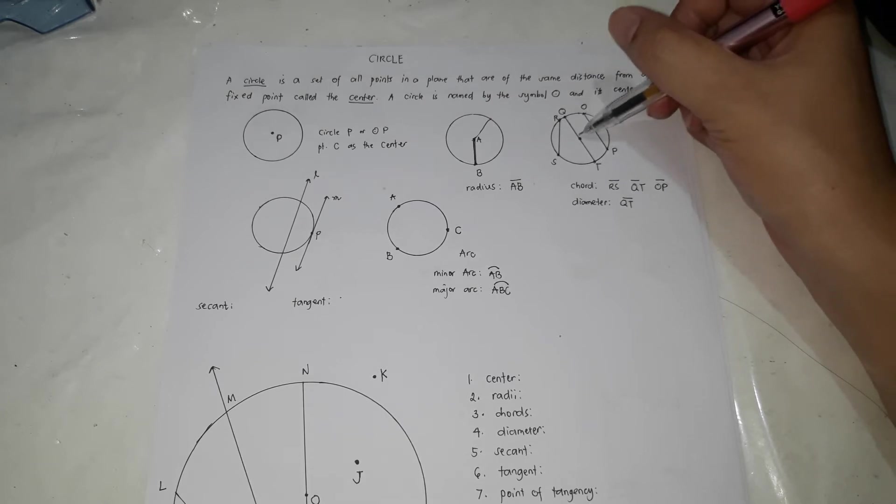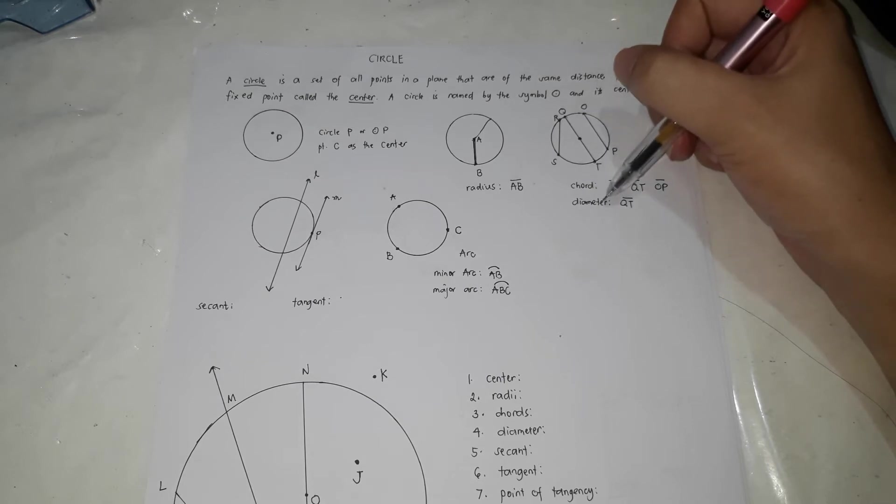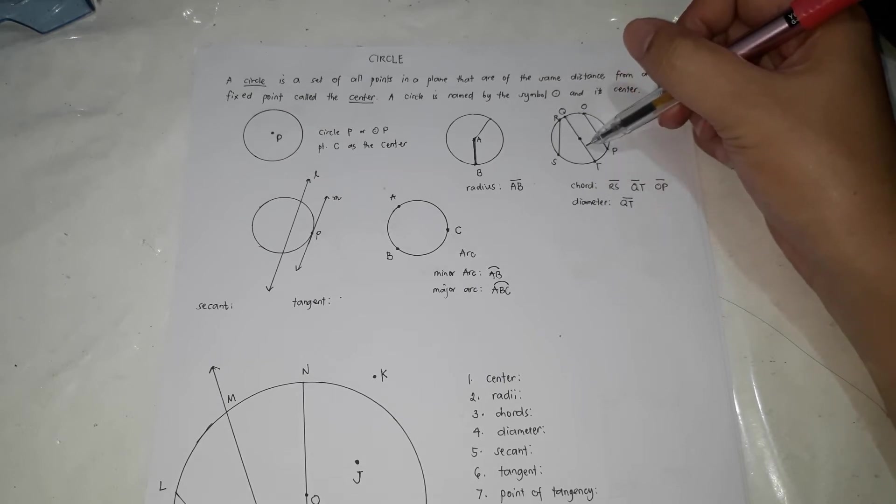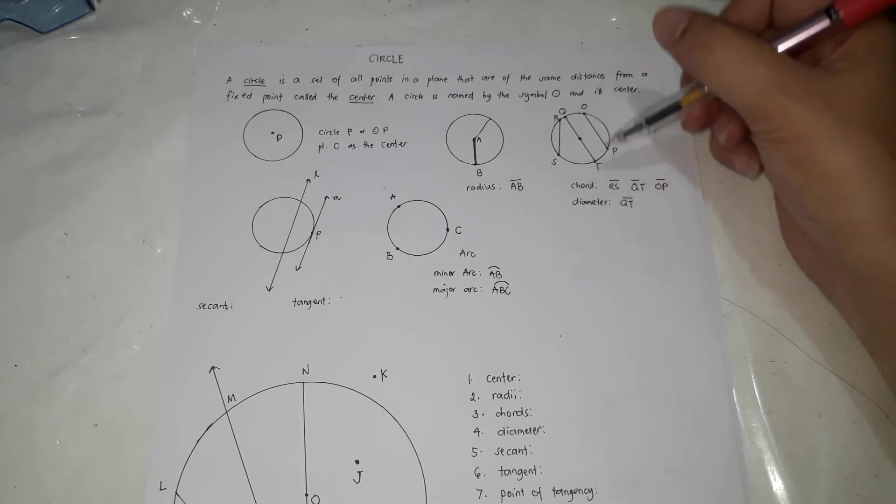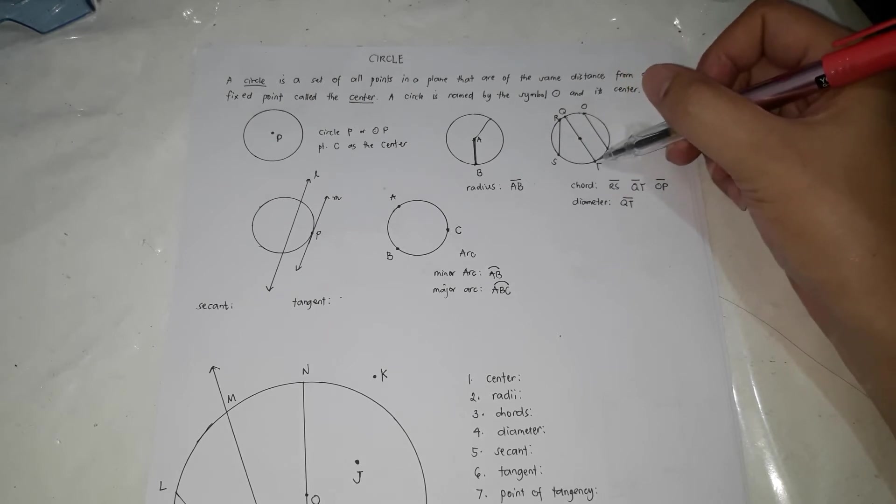However, if you notice, one of the chords is the longest, and if it is the longest, it passes through the center. When the chord passes through the center, that's called a diameter. However, this one is also a chord, but there is a specific name to this chord, which is called diameter. And this diameter is line segment QT.